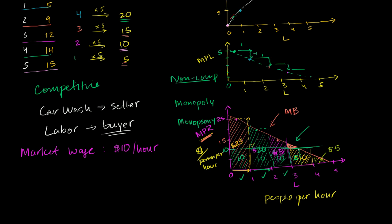In the last few videos, we constructed a marginal product revenue curve for our little competitive car wash. And we essentially figured out how this is really just the demand curve for labor from this firm.